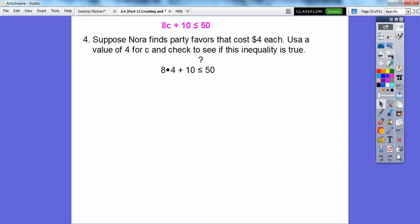So suppose Nora finds party favors that cost $4. Use a value of 4, sorry about my typo right there, use a value of 4 for C and check to see if this inequality is true. So we're just plugging in 4 right here. 8 times 4 is 32, and then 32 plus 10 is 42. Is 42 less than or equal to 50? You bet. So is this inequality true? Yes.